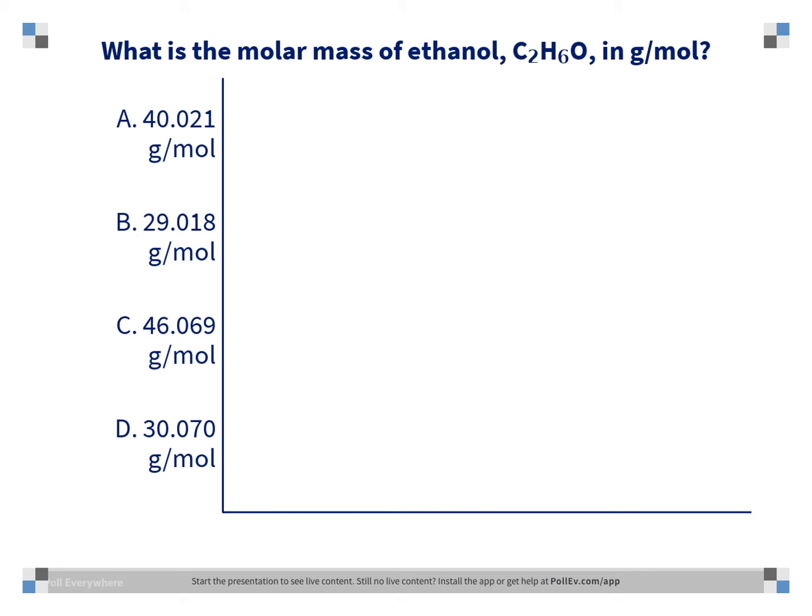The correct answer is C, 46.069 grams per mole. We would take 2 times the mass of carbon, plus 6 times the mass of hydrogen, plus 1 times the mass of oxygen from the periodic table, and add them up to get our answer.